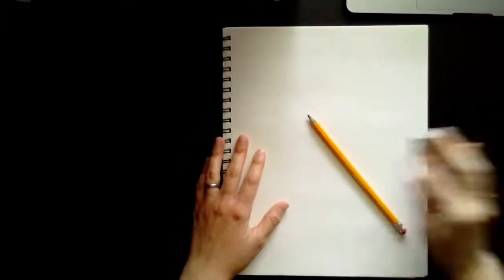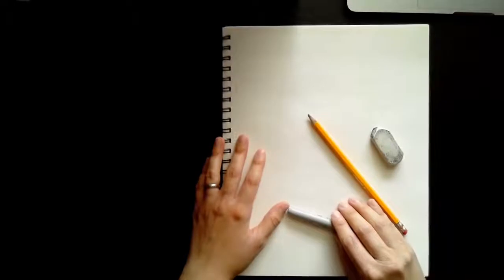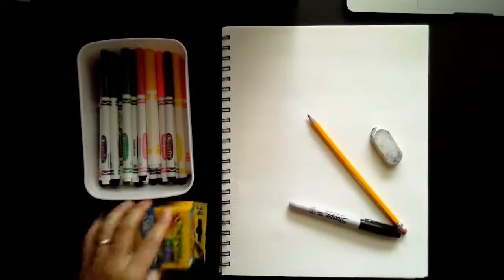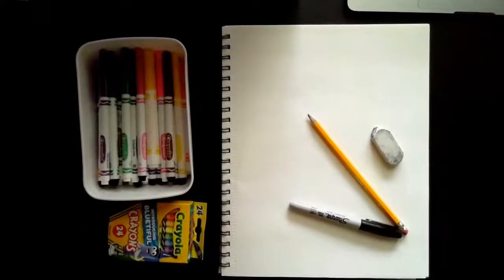All right. So you're going to need a piece of paper, pencil, an eraser and a black marker. Okay, it would be great if you have markers and crayons, too, but those are optional. So you don't need to have markers and crayons, but markers and crayons are definitely a good plus.